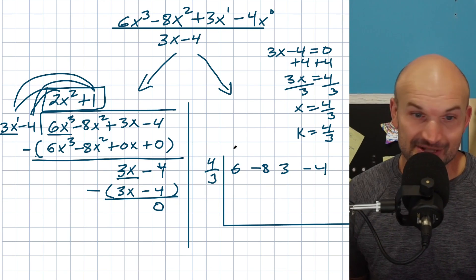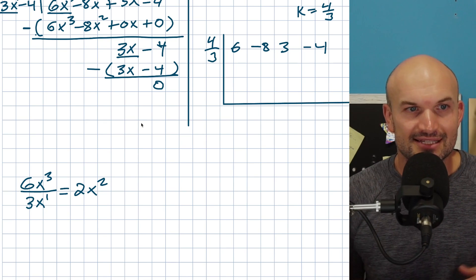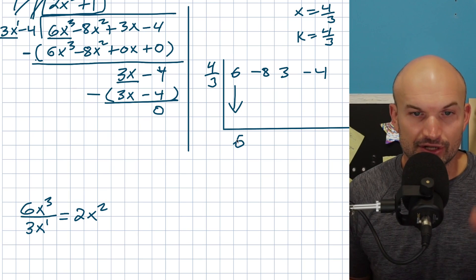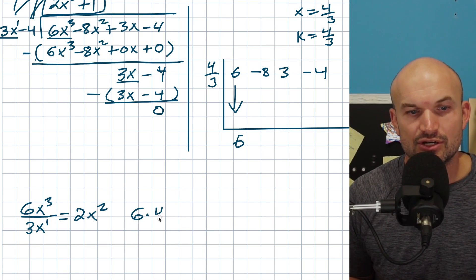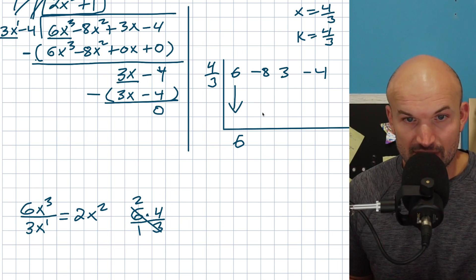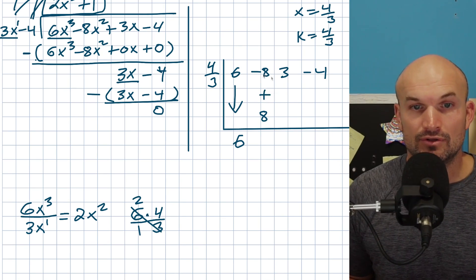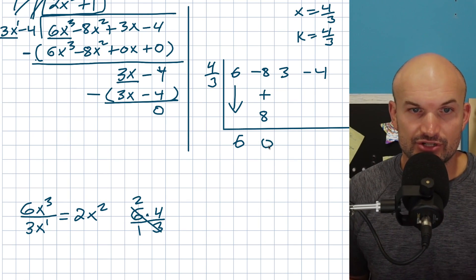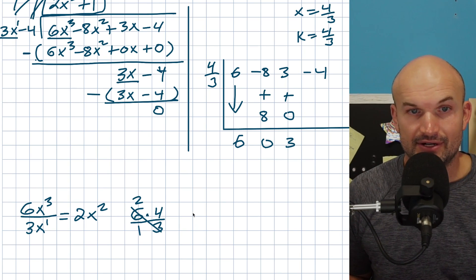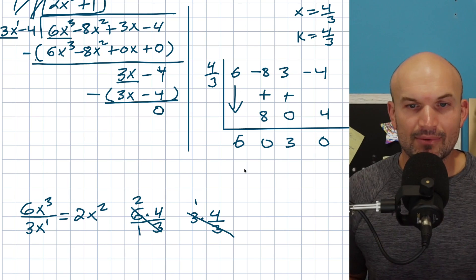Now the problem with this synthetic division setup is we're dealing with fractions. But since we're not writing x terms explicitly, we can move quickly. Bring down the first coefficient: 6. Multiply diagonally: 6 times 4/3 — the 3s cancel, giving 2, times 4 is 8. Write 8 below the next column and add vertically: negative 8 plus 8 is 0. Then 0 times 4/3 is 0, add vertically: 3 plus 0 is 3. Then 3 times 4/3 — the 3s cancel giving 4. Negative 4 plus 4 gives 0. So our row reads 6, 0, 3, 0.